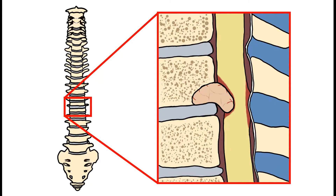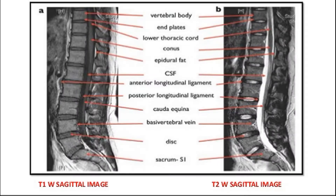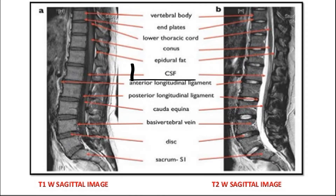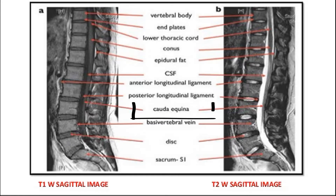Hey guys, it's Layla. Today we'll speak about spinal tumors. First, I will show you the normal MRI scan of the sagittal view of the spine. These are the vertebral bodies, this is the CSF, this is cauda equina.